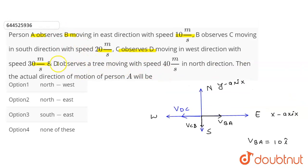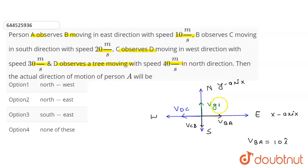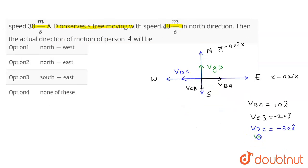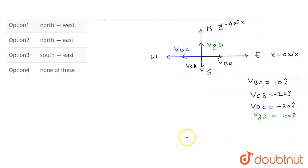D observes a tree moving with a speed of 40 meters per second in the north direction. We can treat the tree as the ground, so the velocity of the ground with respect to D is equal to +40ĵ.